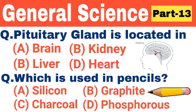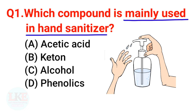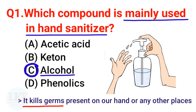Without wasting your time, let's start. Question 1: Which compound is mainly used in hand sanitizer? The right answer is option C — alcohol. Alcohol is mainly used in hand sanitizer; it kills germs present on our hands or any other places.